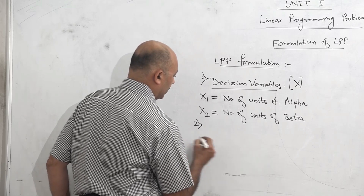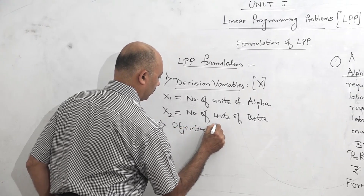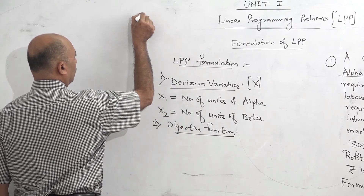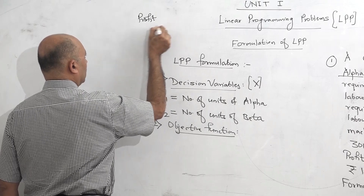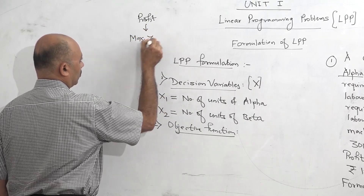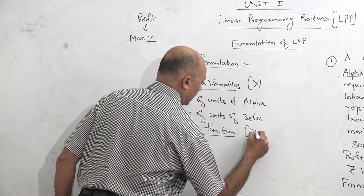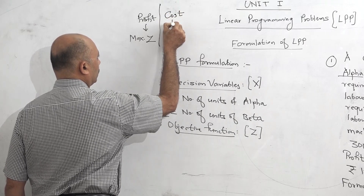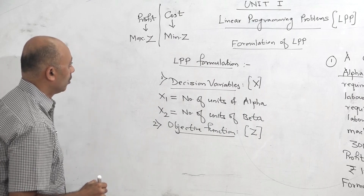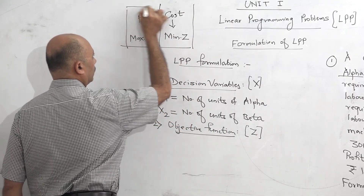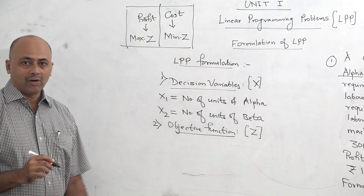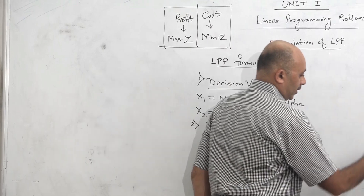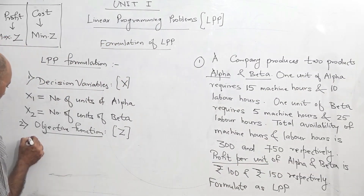The second component of formulation is called the objective function. The objective function can be of two types. If the problem is a profit question, the objective function is maximization, represented as max Z. If it is a cost-related question, the objective function will be minimization, called min Z. In our given question, profit per unit is given, so the objective function will be max Z.